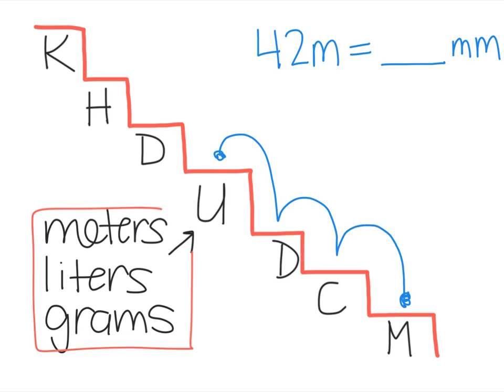Now what does all that mean? It means that you're going to move your decimal, which is hidden right here, because even though we don't see it, there's one right there, and you're going to move it one, two, three spaces to the right because the stairs are moving to the right. The answer here would be 42,000 millimeters.